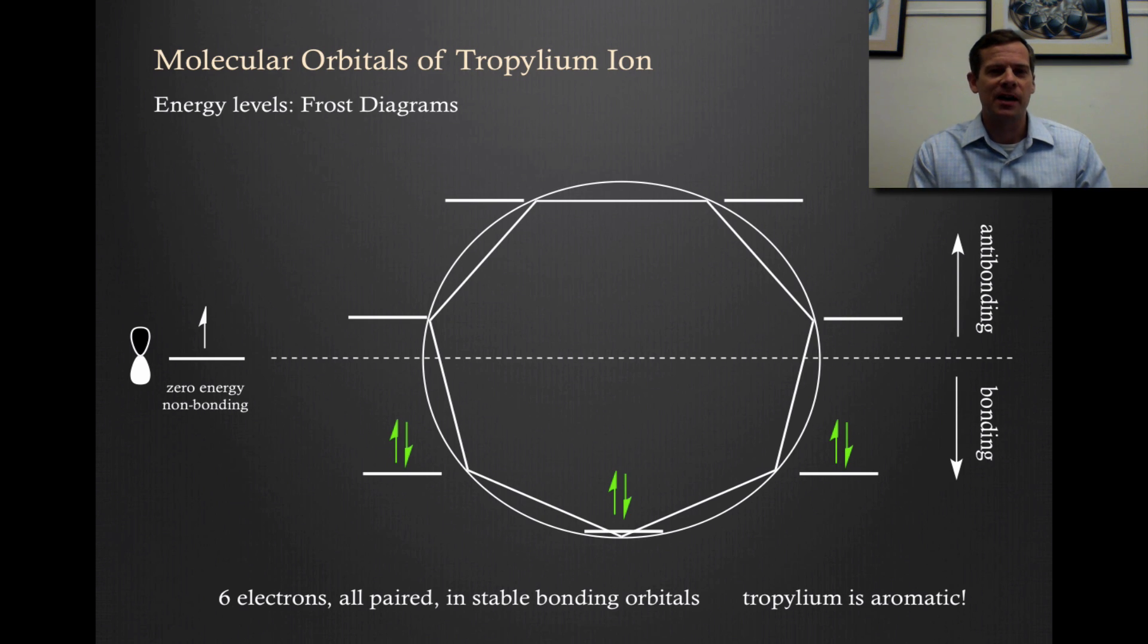Let's look at an orbital diagram of tropylium ion. This is the frost diagram. To build this up, we have our zero bonding line. We have a circle which is centered on that line. And since we have seven p-orbitals that we're combining to make this molecular orbital system, we're going to inscribe a regular heptagon in the circle and put a molecular orbital at every single vertice. In this case, we still only have the six pi electrons that we would have with benzene. So they go two into the lowest and then two into the next degenerate pair of orbitals. You can see that all six electrons are paired and they're all in very stable bonding orbitals. So tropylium is an aromatic system.